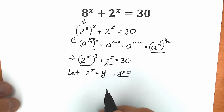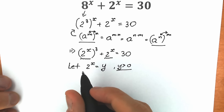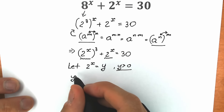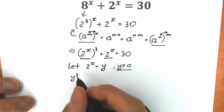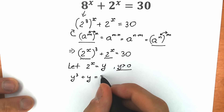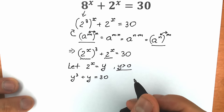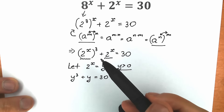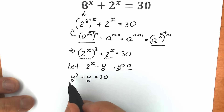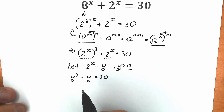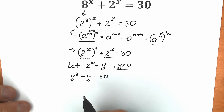Let's apply this substitution. We have y cubed plus y equal to 30. Right now, instead of this exponential part, we have a basic cubic equation. Let's solve it.